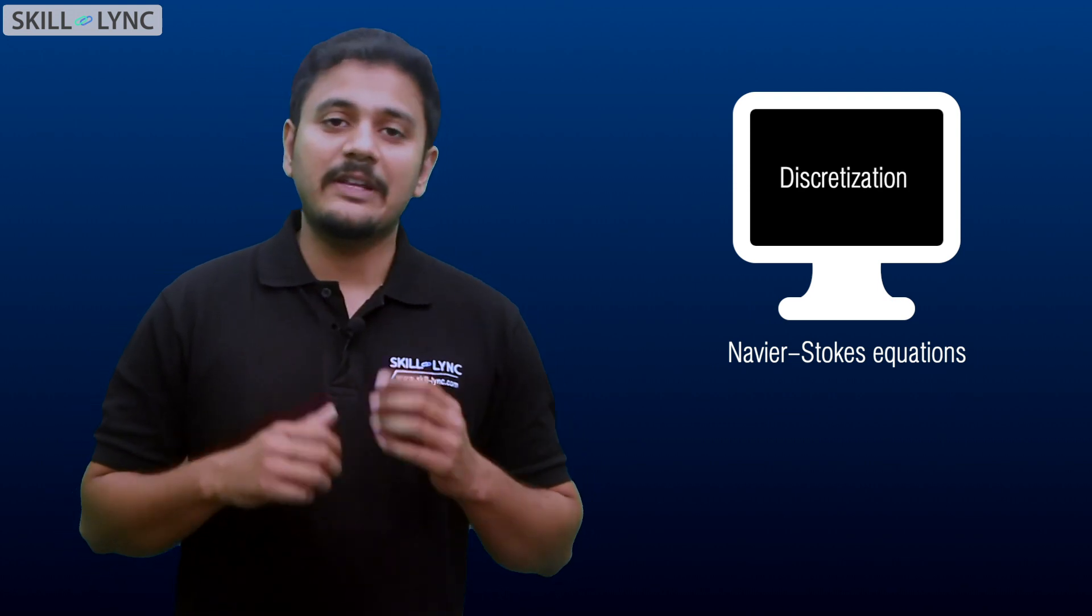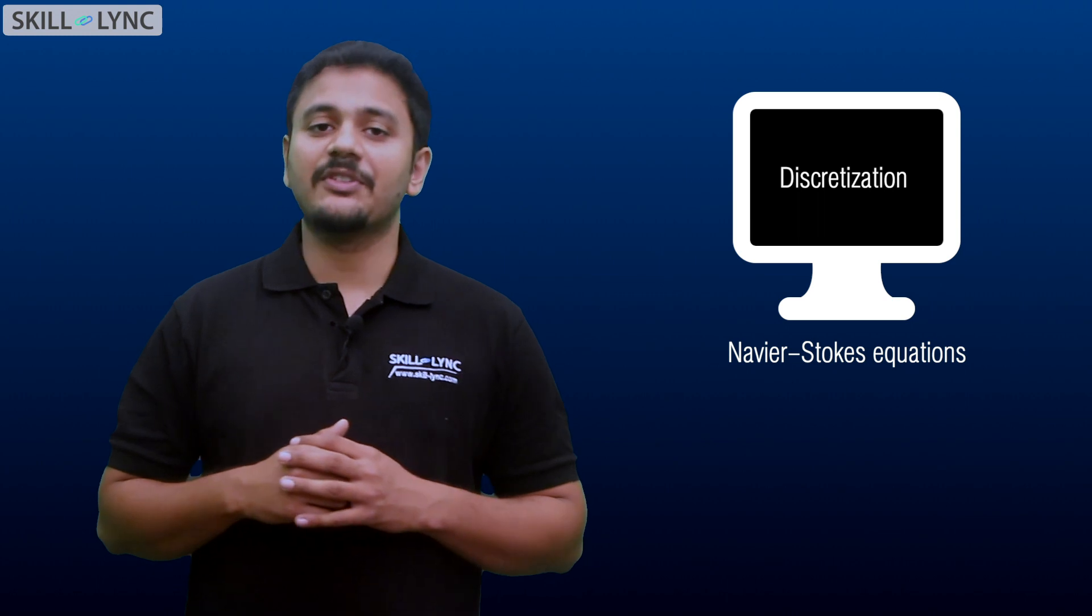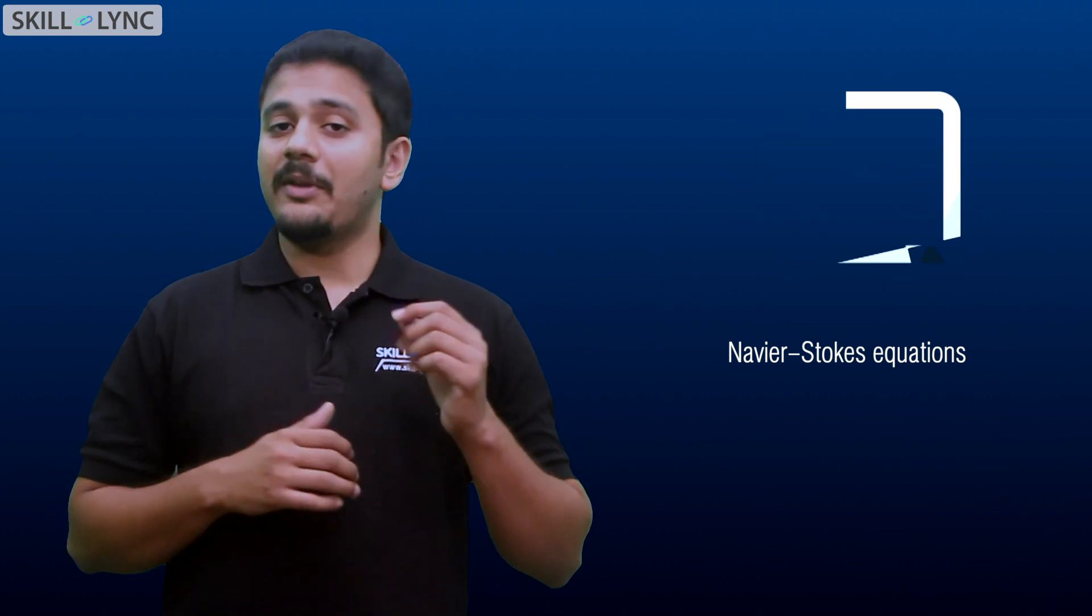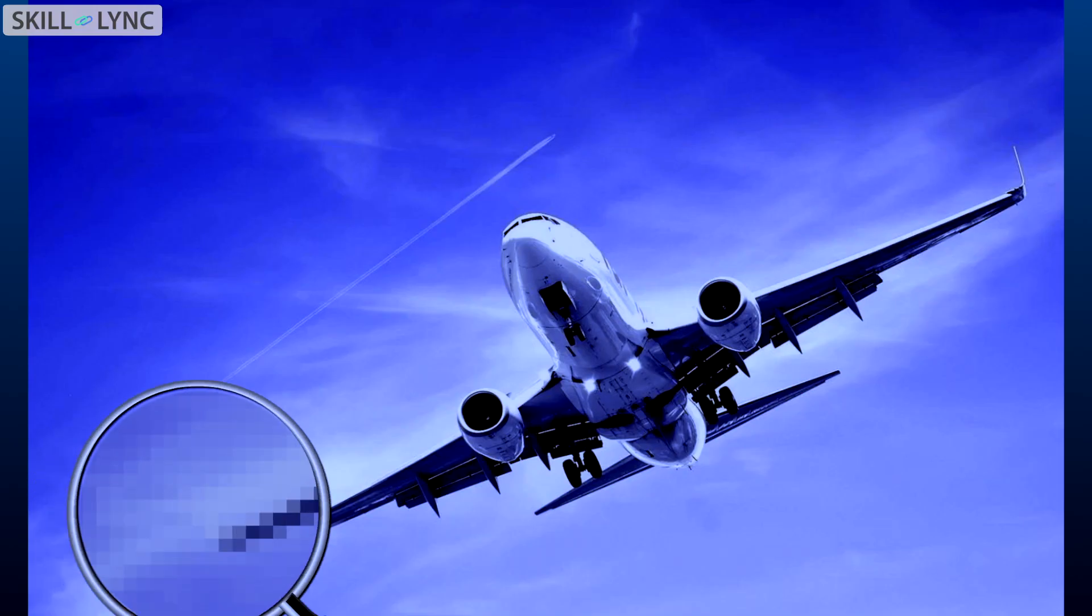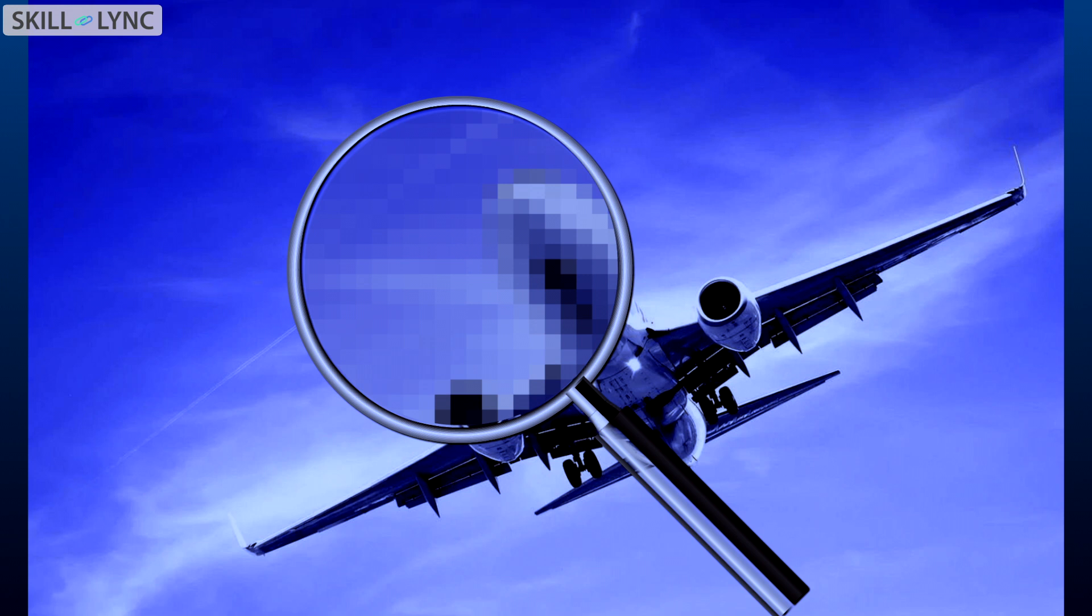So let's see how discretization works. Consider the picture of an aeroplane here. When we discretize a system, we break it into smaller elements. In this analogy, we can say that the smaller elements are like pixels.